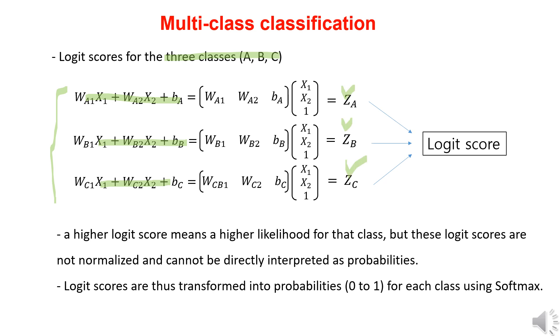A higher logit score means a higher likelihood for that class. However, since logit scores are not normalized, they cannot be directly interpreted as probabilities. Therefore, the logit scores are transformed into probabilities between zero and one, using the softmax function.